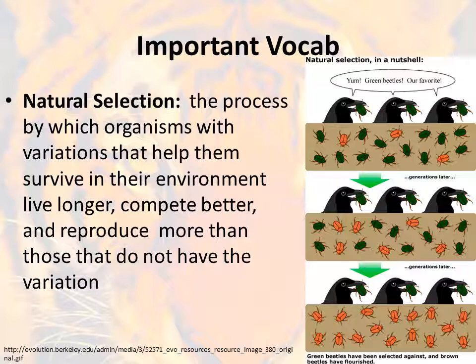Natural selection is a process in which organisms with variations that help them survive will live longer, compete better, and reproduce more often than those that do not have that variation. A classic cartoon example shows a bird eating beetles. For whatever reason, the birds are only eating the green beetles. This means green beetles have a very hard time living long enough to reproduce. As the next generation goes by, we see fewer and fewer green beetles. Given enough time, mostly just orange beetles are left. These orange beetles survive natural selection — nature has selected them by having the trait they need to reproduce and pass along those traits.